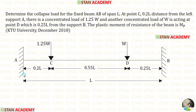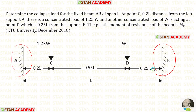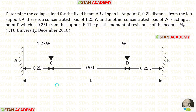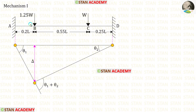In this beam, at the fixed end A we have a plastic hinge, and at the fixed end B we have another plastic hinge. The third plastic hinge can form either under the point load at point C or under the point load at point D. So there will be two mechanisms. Now let us make the first mechanism.